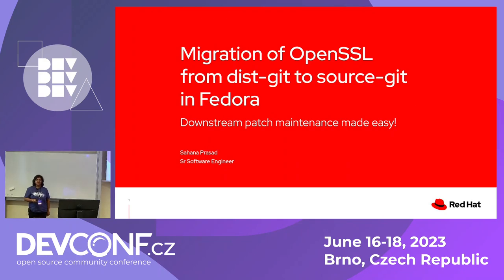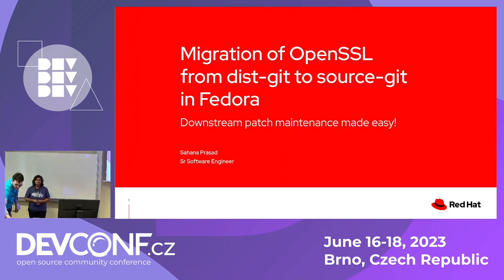Hi everybody, I'm Sahana Prasad. I work for the crypto team at Red Hat. I've helped co-maintain OpenSSL for about two years both in Fedora and in RHEL. My topic for today is migration of OpenSSL from distgit to sourcegit in Fedora, with the idea that downstream package maintenance could be a bit easier.